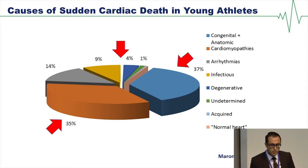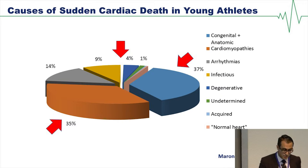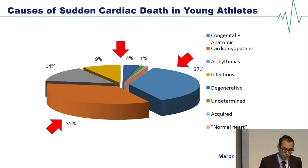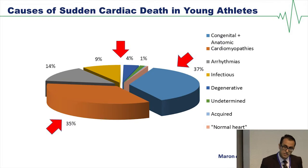If one considers the demographics of the largest case series worldwide of sudden cardiac death in young athletes, it becomes apparent that the most common causes are cardiomyopathy and other inherited conditions, as well as structural congenital problems and infectious and degenerative causes — and that's what we're going to discuss.